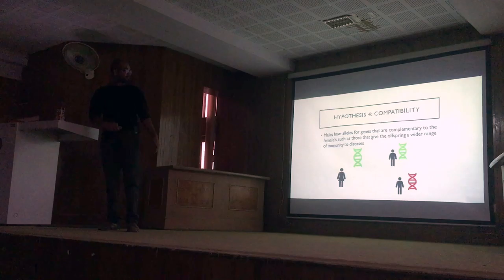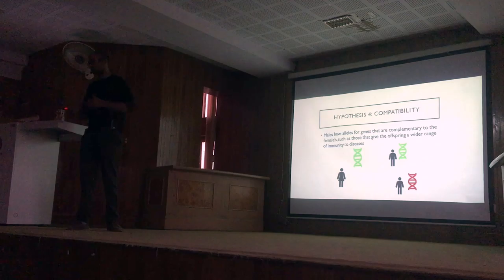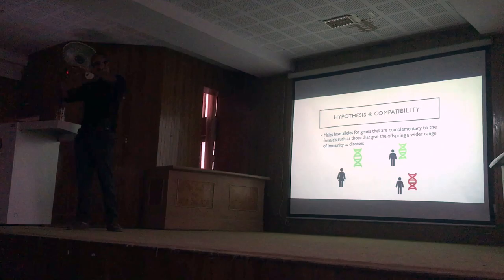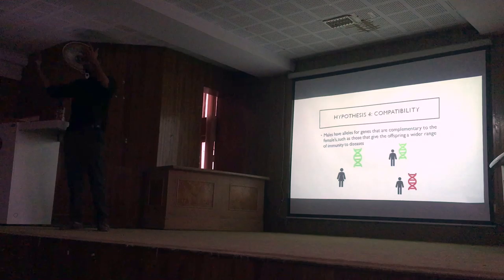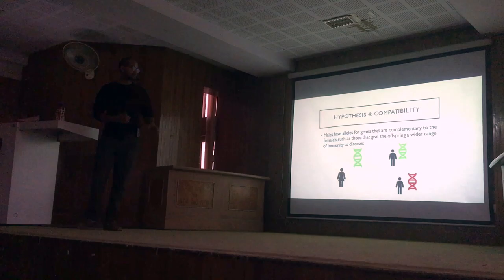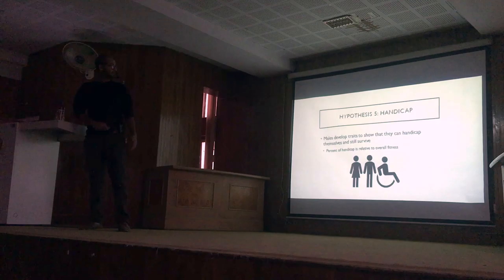The fourth hypothesis is the compatibility hypothesis. There's something called the major histocompatibility complex (MHC) in humans, which codes for our immune system or a component of it. Two individuals will have different variants of this complex. It's ideal for offspring to have two pairs of different MHCs, because the combined effect of both parents' MHCs results in offspring much better able to handle diseases and stresses. So females may select mates through this compatibility — and there are analogous examples in other species as well.